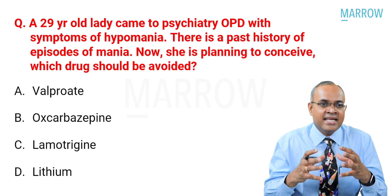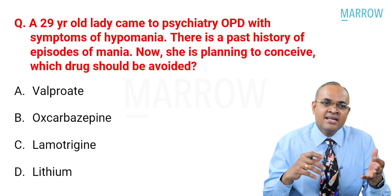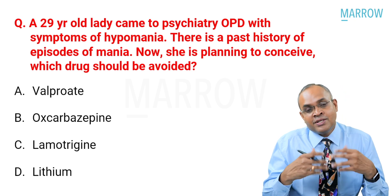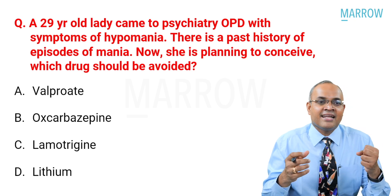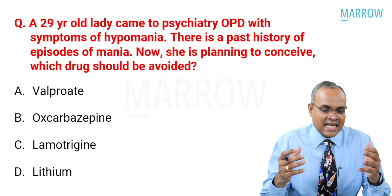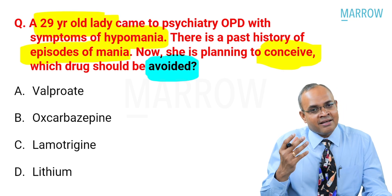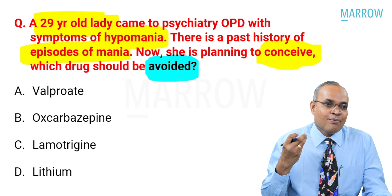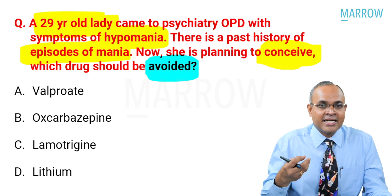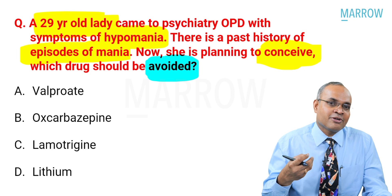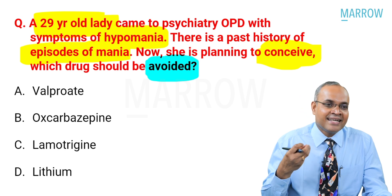A 29-year-old lady came to a psychiatry OPD with symptoms of hypomania and a past history of mania. She is planning to conceive. Which drug should be avoided? The options are valproate, oxcarbazepine, lamotrigine, lithium. In general, valproate should typically be avoided in reproductive-age-group women, because studies have shown 50% of pregnancies can be unplanned and valproate is a very teratogenic agent.